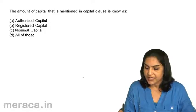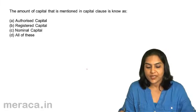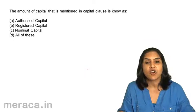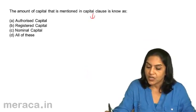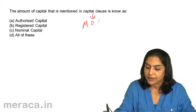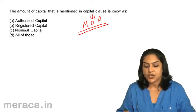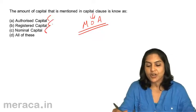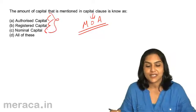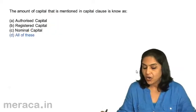The amount of capital that is mentioned in the capital clause is known as: A. Authorized Capital. B. Registered Capital. C. Nominal Capital. D. All of these. The capital clause appears in what is called the Memorandum of Association. This is called authorized capital; it is also called registered capital; it is also called nominal capital. All this is one and the same, and therefore the answer is D — All of these.